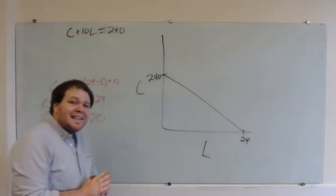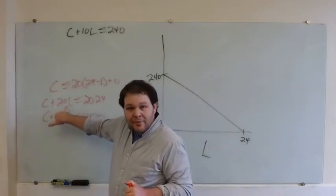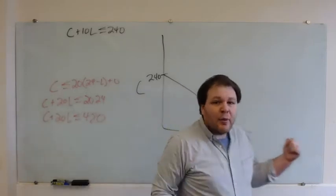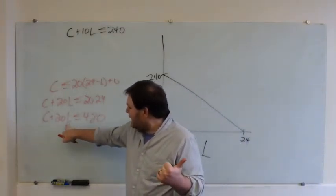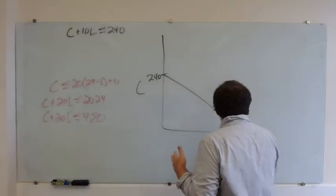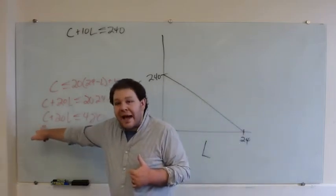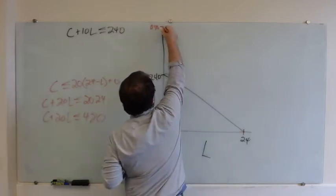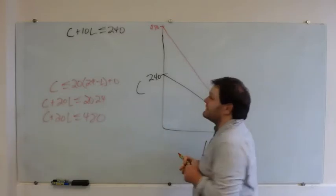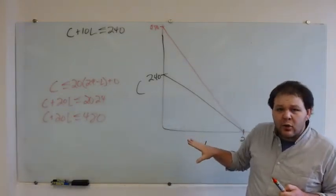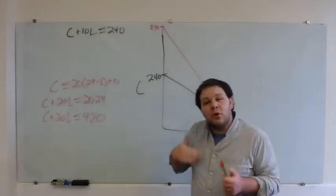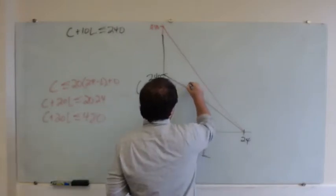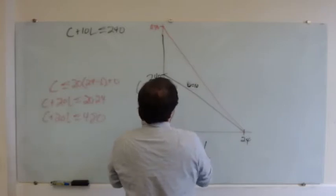An important thing to note here is that when my wage goes up, not only does the price of leisure go up, but my income also goes up. So my new budget constraint has higher levels of income and a higher price of leisure. The maximum amount of leisure I can afford is still 24 hours — I haven't gained more hours in the day — but the maximum consumption I can afford has increased to $480. I shifted from a price ratio W equals 10 to W equals 20.